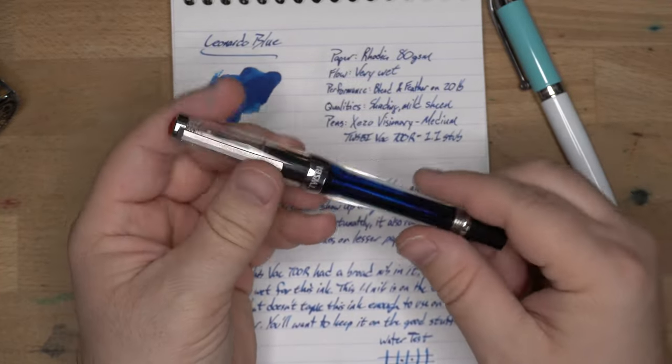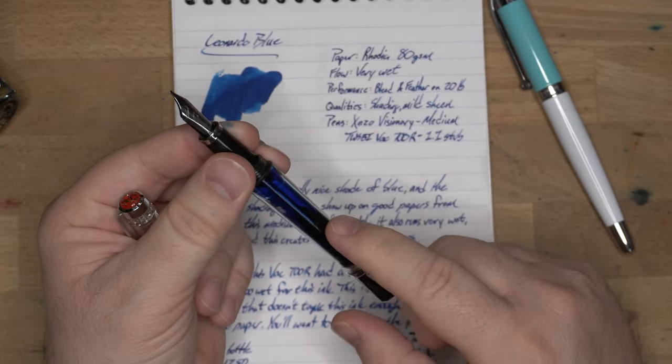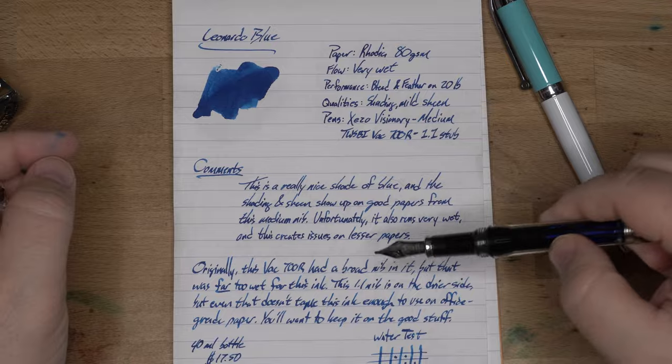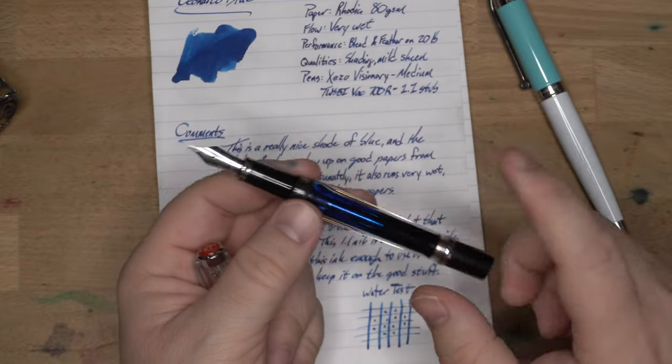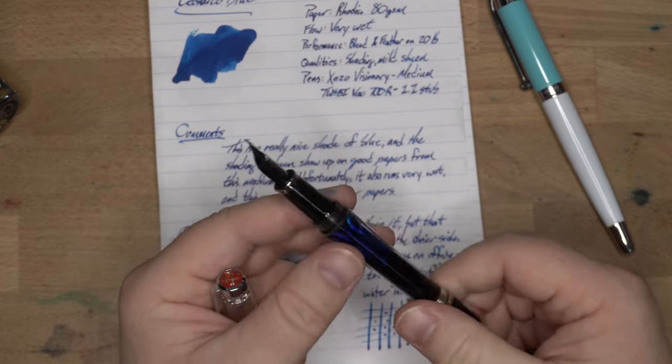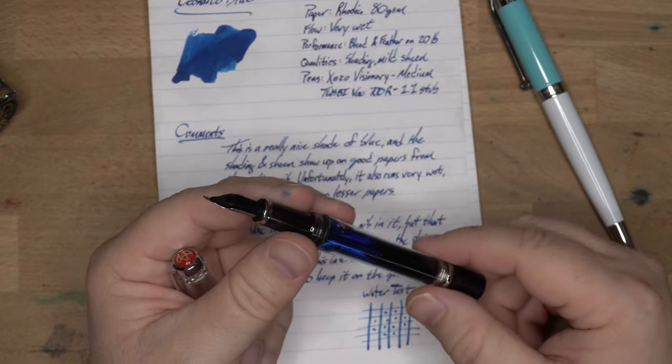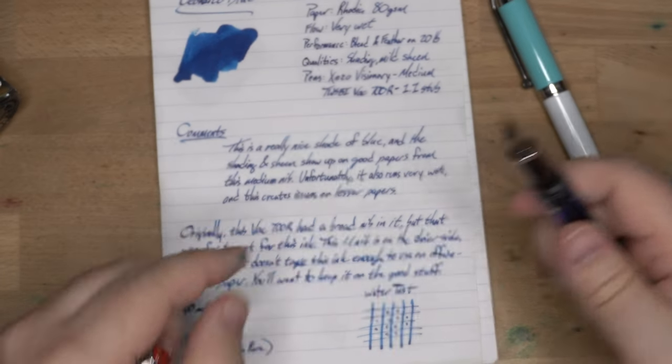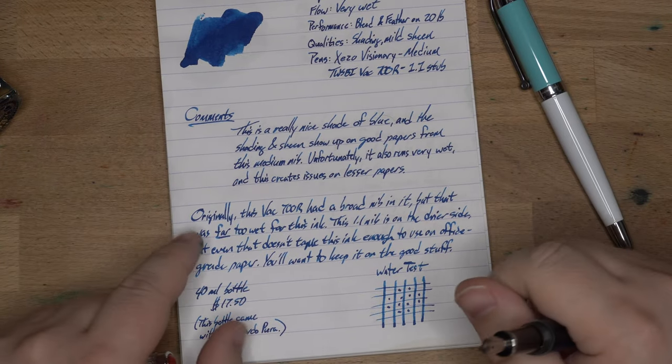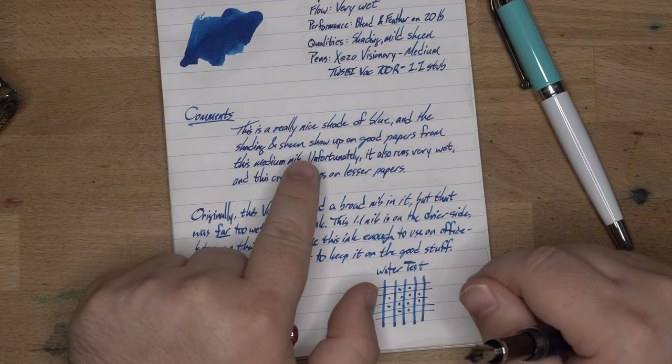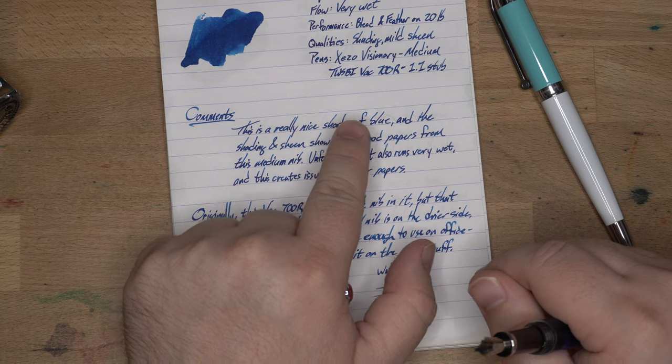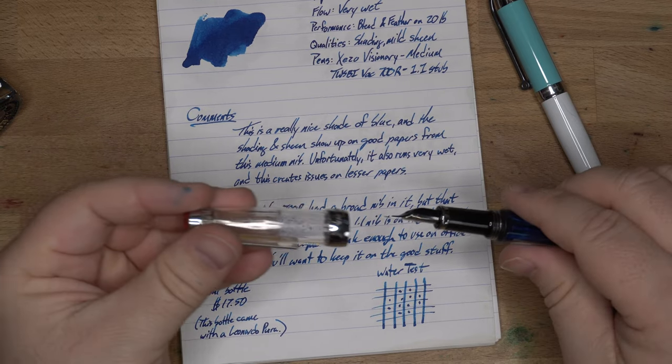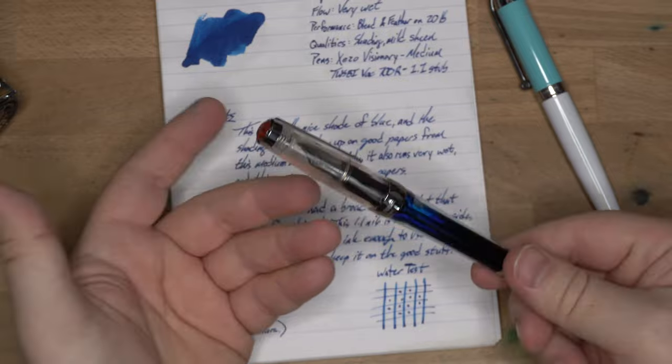This is a TWSBI VAC 700R, and you can see it's still about half full. I've been using this a little bit sparingly. I had a broad nib in here actually when it started out, and that broad nib was way too wet for this ink. I had not calculated the crazy wetness of this ink. So I put this other nib. This is the nib actually that came with it. This is a 1.1 stub, and these run a little bit on the dry side, and so that really helps to corral this ink and make it far more usable. You can see up here there really isn't hardly any shading, whereas here you see a better amount of shading because the nib is a little bit on the drier side.